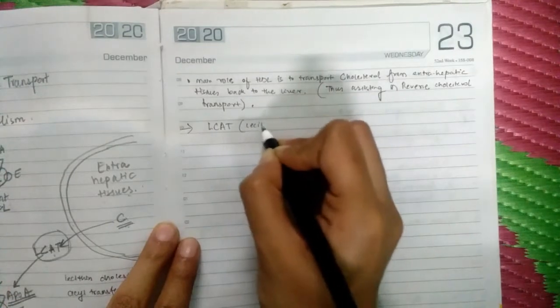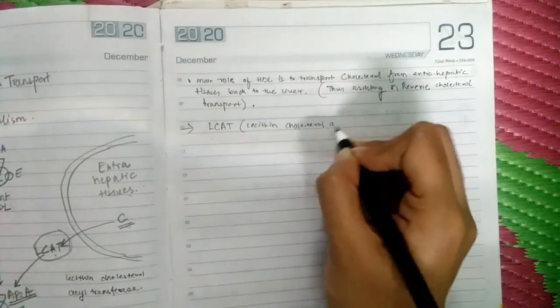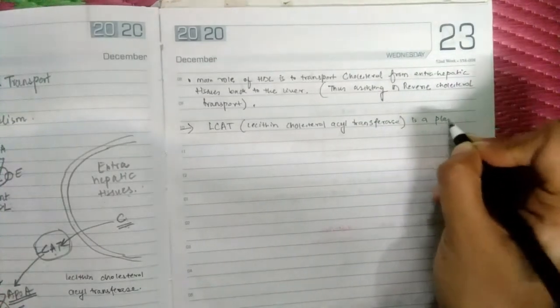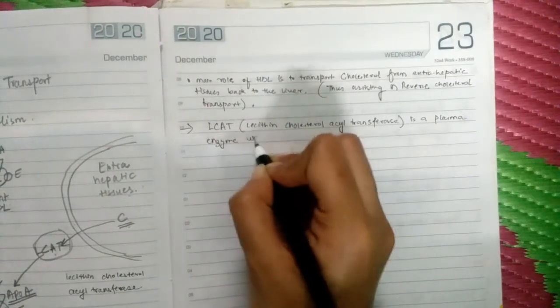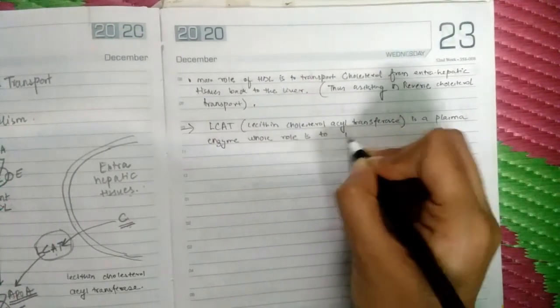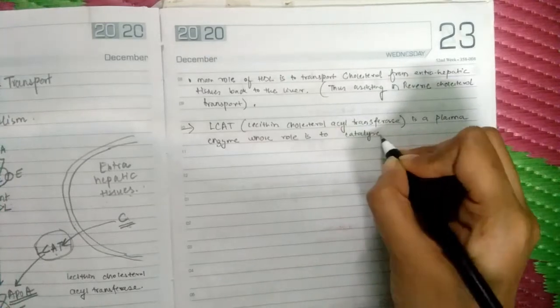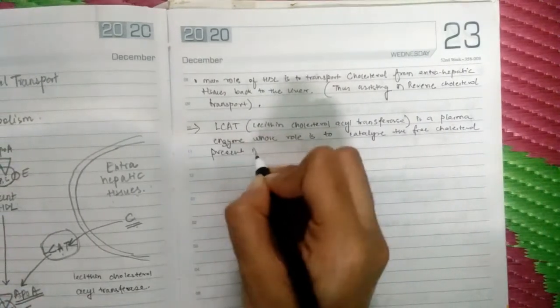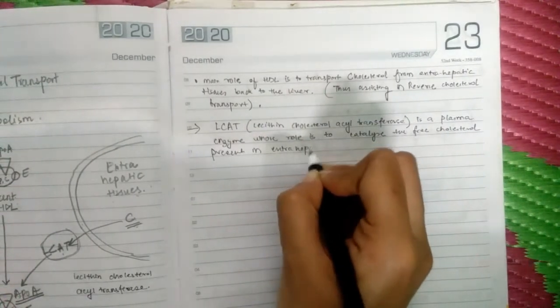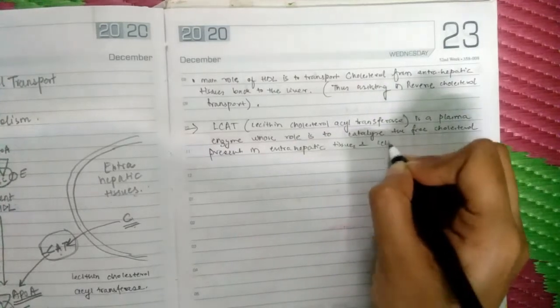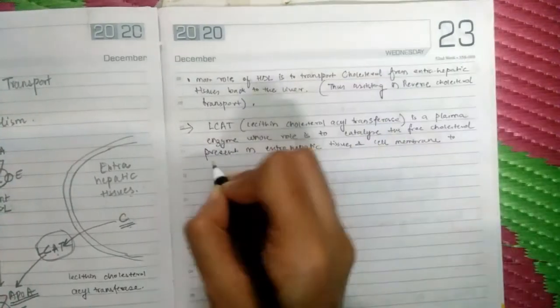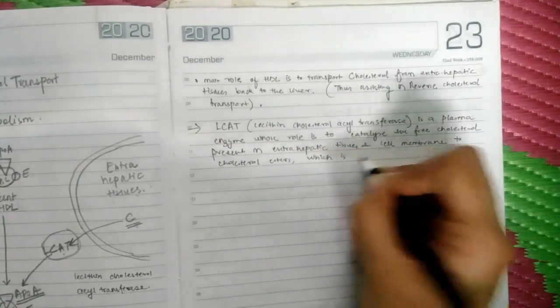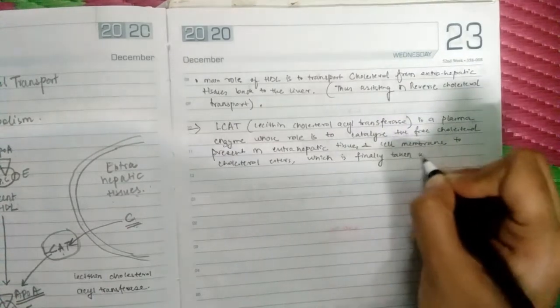LCAT, or lecithin cholesterol acyl transferase, is a plasma enzyme whose role is to catalyze the free cholesterol present in extra hepatic tissues and cell membrane, which is finally taken up by HDL.